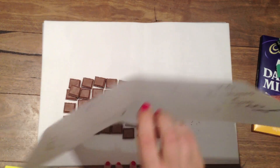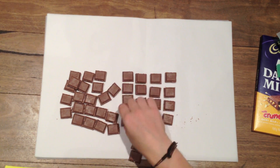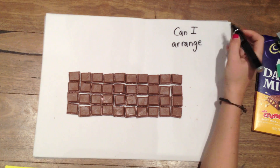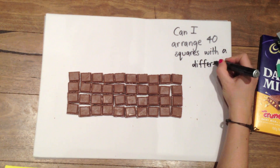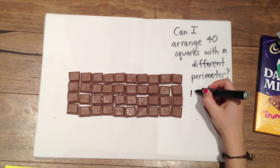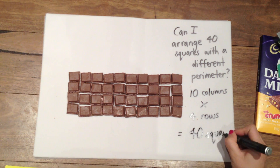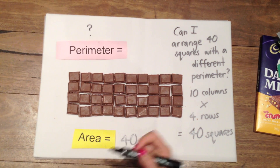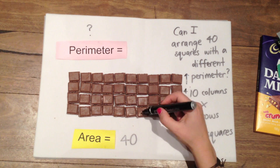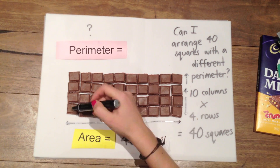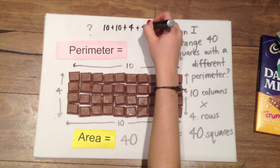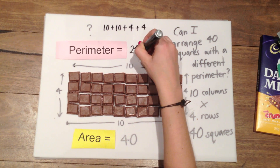What if I arrange the squares into a different shape? Can I arrange these same 40 squares so that they have a different perimeter? This arrangement has 10 columns and four rows, which gives an area of 40. But is the perimeter different? If I add the sides of four, four, ten, and ten, I get a perimeter of 28.